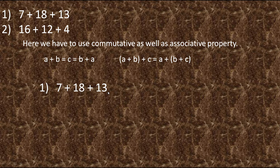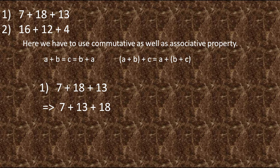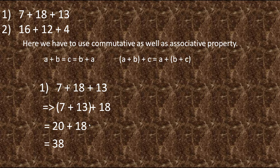As we know, 7 plus 3 gives us 10, so we can make the combination of these two numbers to get a multiple of 10. Let's interchange the place of 18 and 13 with the help of commutative property — it becomes 7 plus 13 plus 18. With the help of associative property, let's group 7 and 13: that gives 20, plus the remaining 18. So the final answer is 38.